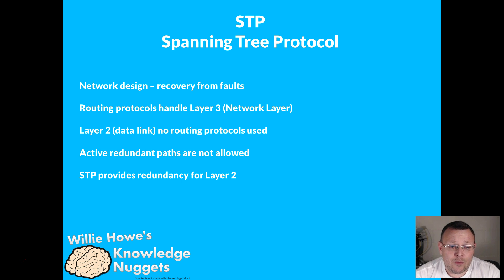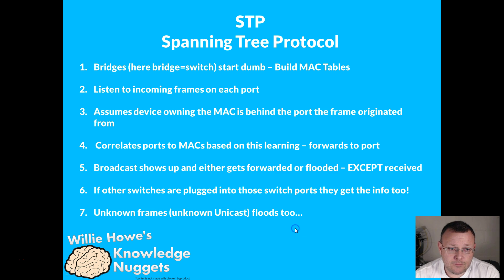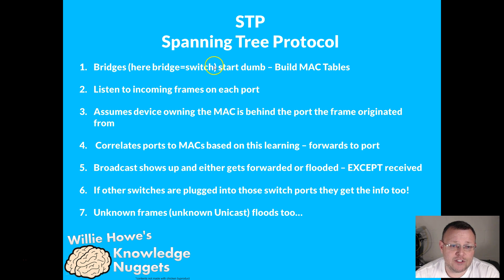Routing protocols handle layer three, which is the network layer. So if you're familiar with OSPF, it would be able to handle the redundancy in layer three. Layer two, which is the data link layer, there are no routing protocols used, and active redundant paths are not allowed. So STP, spanning tree protocol, provides the redundancy for layer two. I'll also use switch and bridge interchangeably here — bridge equals switch for all intents and purposes.